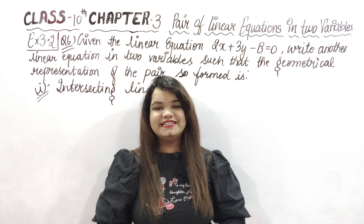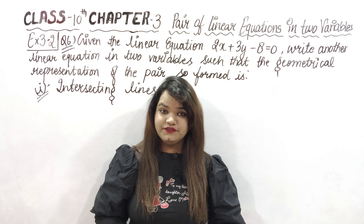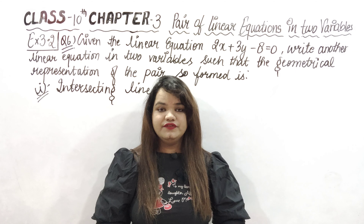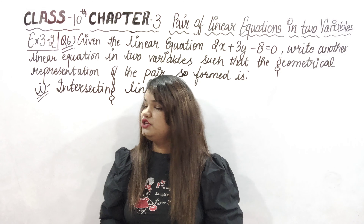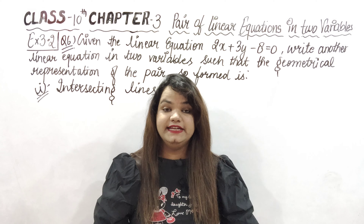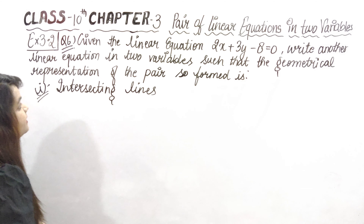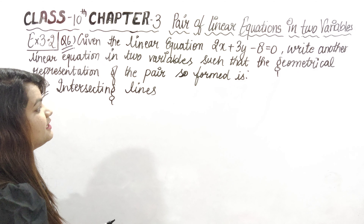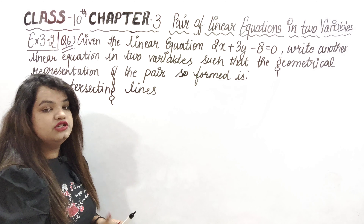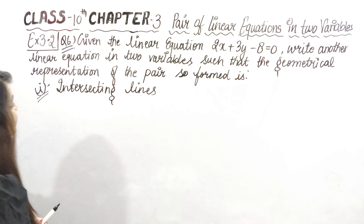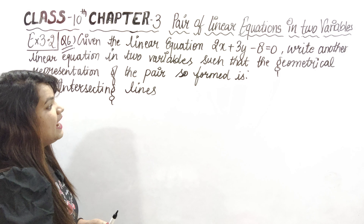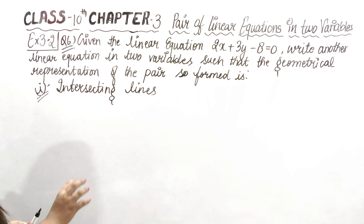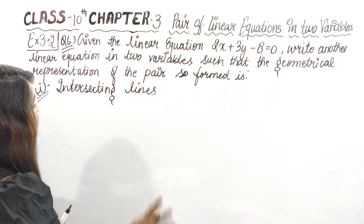Hey guys, welcome back to my Challenge You Math series. Now in Class 10th Chapter 3, which is Pair of Linear Equations in 2 Variables, we are going to solve Exercise 3.2 Question Number 6. Question number 6 says: given the linear equation 2x plus 3y minus 8 is equal to 0, write another linear equation in two variables such that the geometrical representation of the pair so formed is — first part — intersecting lines.